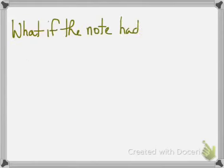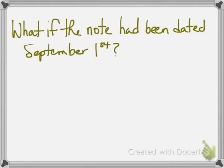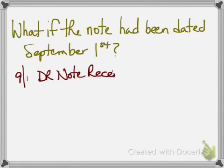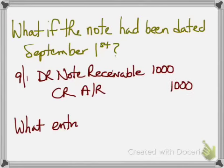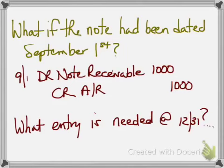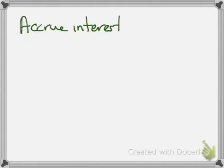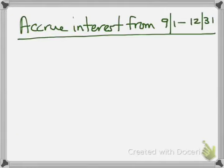Now, what if the note had been dated September 1st instead of March 1st? We would record the same initial entry — debit notes receivable, credit accounts receivable for $1,000. But because this note spans two years — September through December in the current year, and then January and February into the next year — we need to record an accrual or adjusting entry at December 31st, since we've earned some interest even though we're not receiving any payment until maturity.